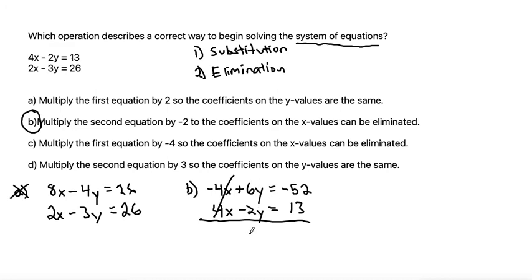6y minus 2y is 4y, and negative 52 plus 13 is negative 39. And we can finish solving for y by dividing by 4 on both sides to get a value for y is negative 39 over 4.